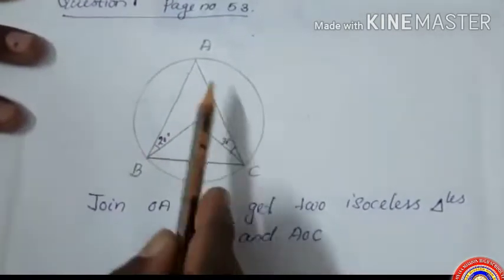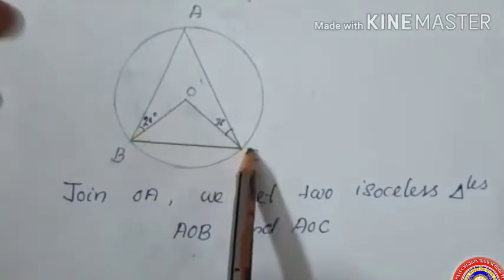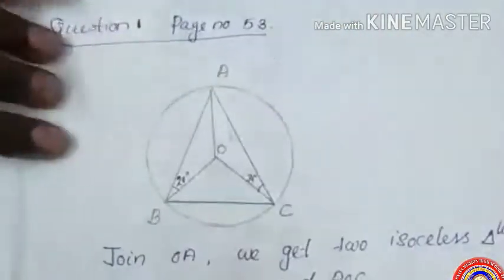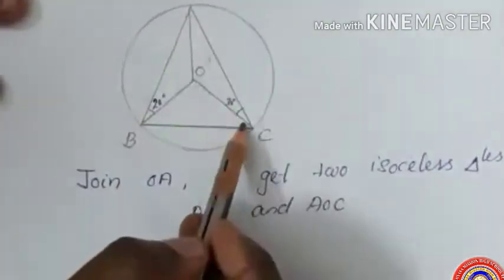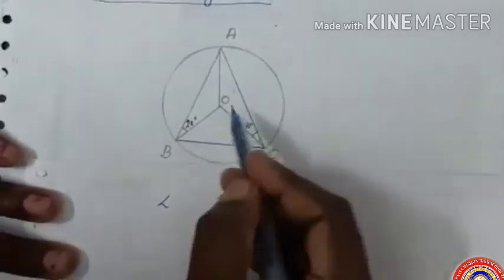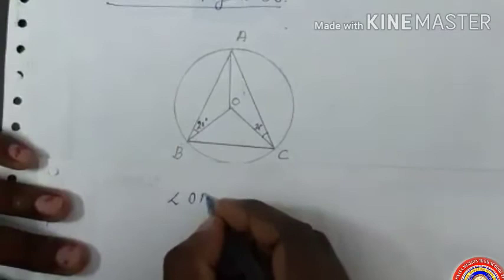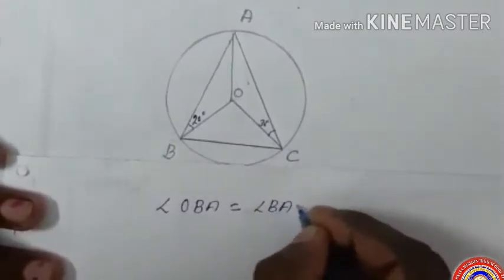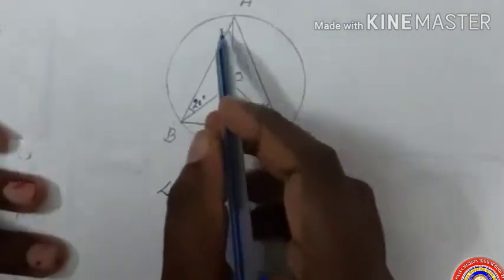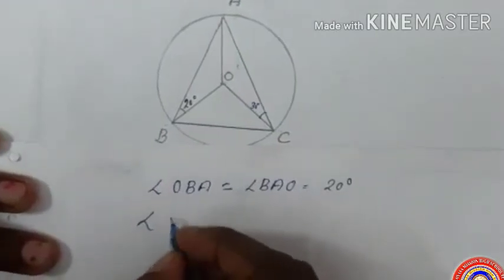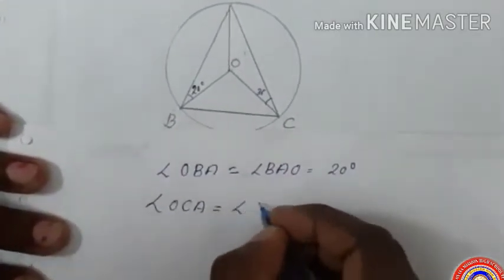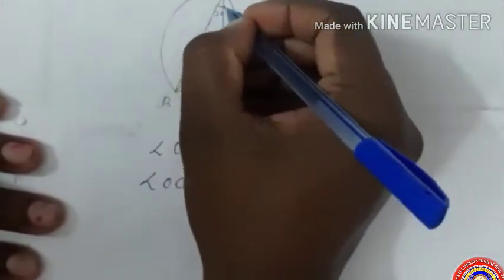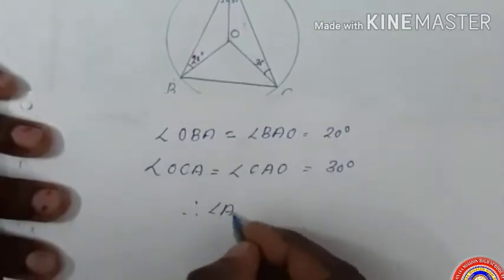In the given figure, we have to find all the angles of triangle ABC and triangle OBC. First, we join OA. We get two isosceles triangles AOB and AOC. Angle OBA equals angle BAO equals 20 degrees, since AOB is an isosceles triangle. For isosceles triangle AOC, angle OCA equals angle CAO equals 30 degrees. Therefore, angle A equals 20 plus 30 equals 50 degrees.